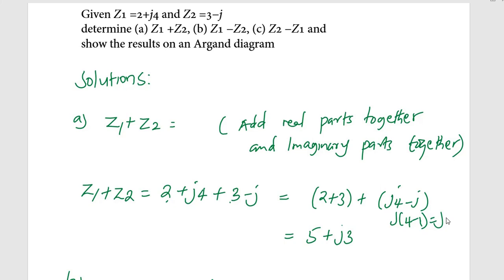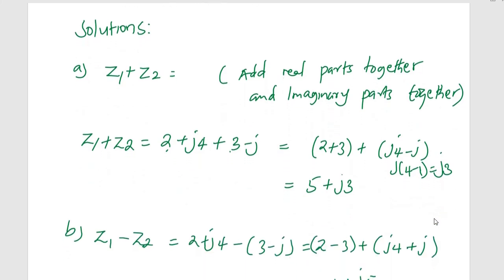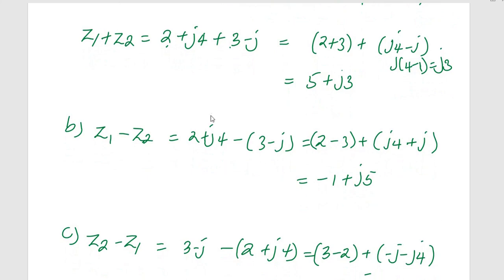For z1 minus z2, we subtract the real parts and the imaginary parts separately. We have (2 + j4) minus (3 minus j). Distributing the negative sign: 2 minus 3 is negative 1, and j4 minus negative j gives j4 plus j which is j5. So z1 minus z2 equals negative 1 plus j5.